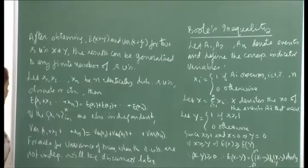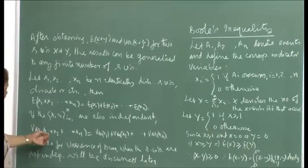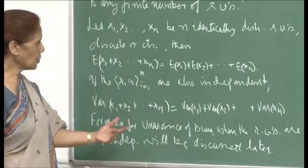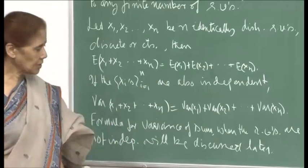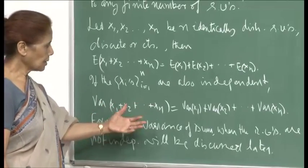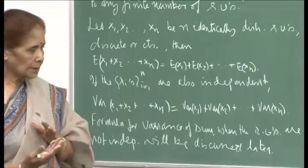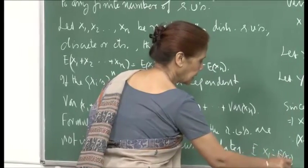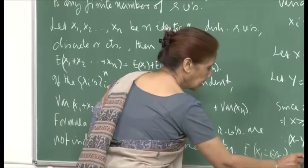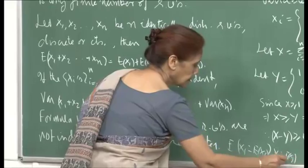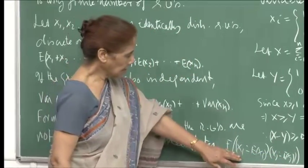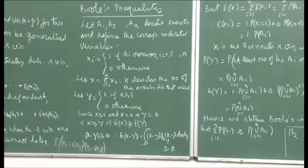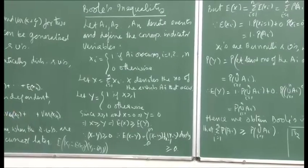If the Xi's are also independent, then we can extend this result: Var(X1 + X2 + ... + Xn) = Var(X1) + Var(X2) + ... + Var(Xn). As we saw for the two-variable case, the cross-product terms vanish. Under independence, terms of the form E[(Xi - E(Xi))(Xj - E(Xj))] go to zero, leaving only the squared terms, giving us the sum of variances.